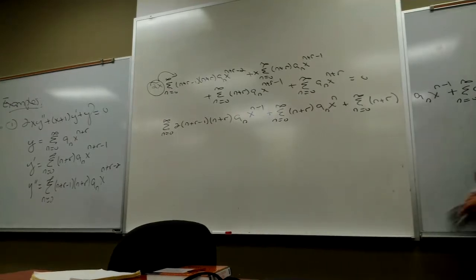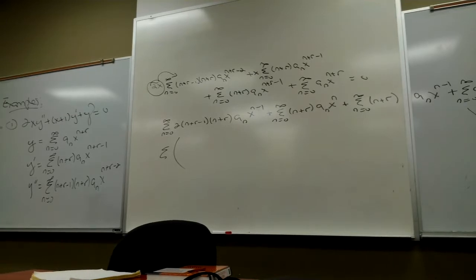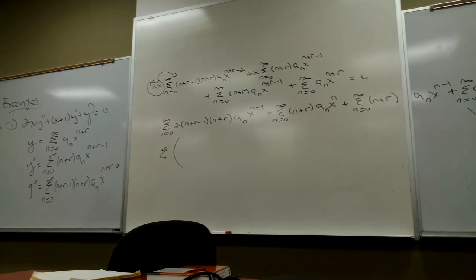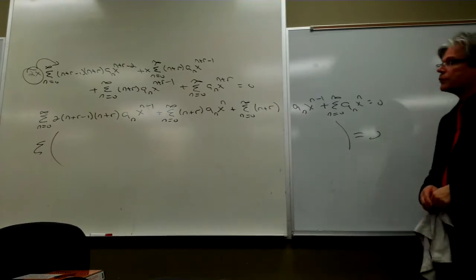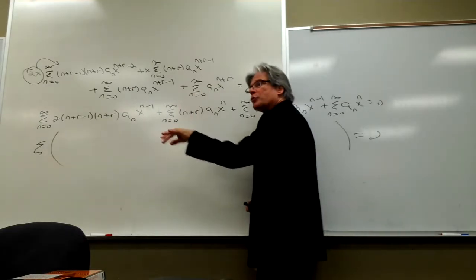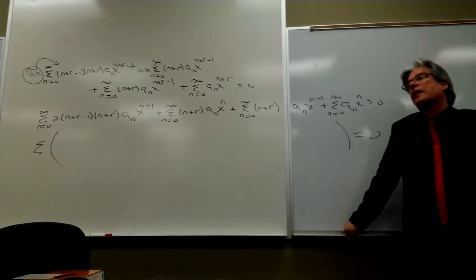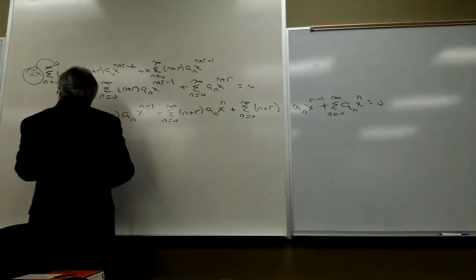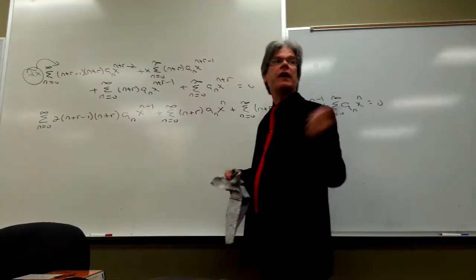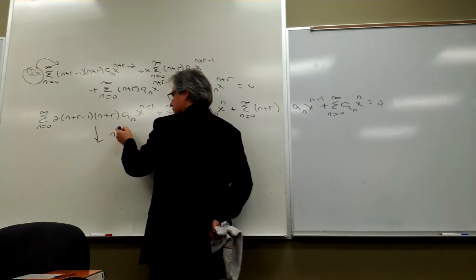It's time to combine these into a single sum equal to zero. But I can't combine them because the exponents for X aren't all the same, and the starting indices differ. I need to: first, force all X exponents to be the same; and second, make the initial values of the index variable match. For the first sum, I'll replace N with K plus 1. That gives me exponent X to the K — a nice clean power.